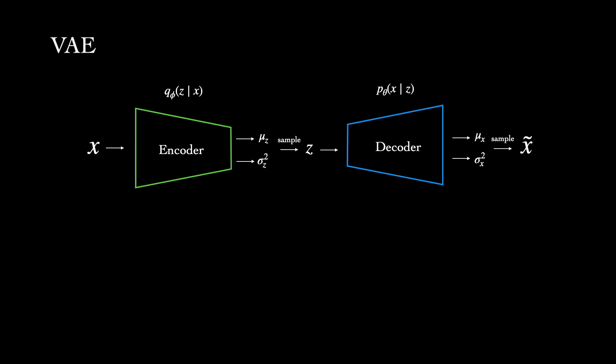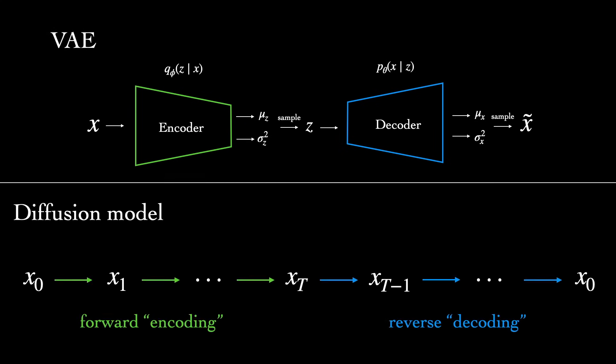So we can think of the forward process in diffusion models as analogous to the encoder, producing latence from data, and the reverse process as analogous to the decoder, producing data from latence.